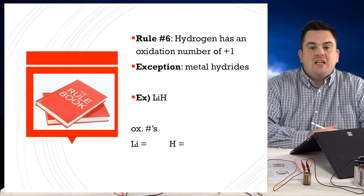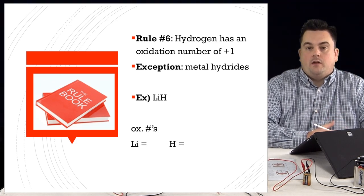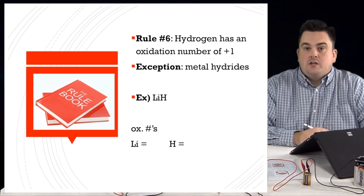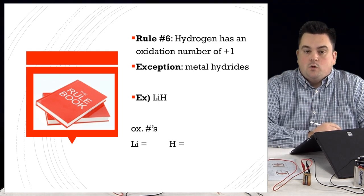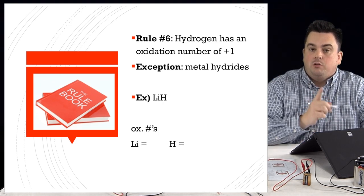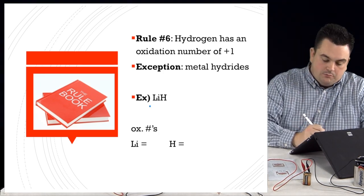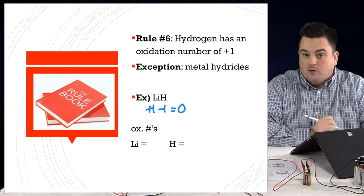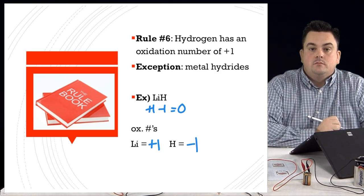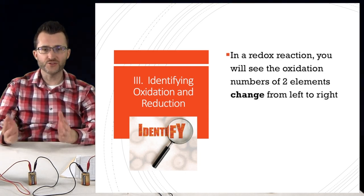Rule 6: hydrogen has an oxidation number of plus one, with one exception — metal hydrides. You'll recognize a metal hydride because you'll see a metal in front of hydrogen. For example, in lithium hydride: lithium is in Group 1 — an alkali metal — so it always has an oxidation number of plus one. That means hydrogen must be negative one, because plus one minus one equals zero. So lithium is plus one and hydrogen is minus one.